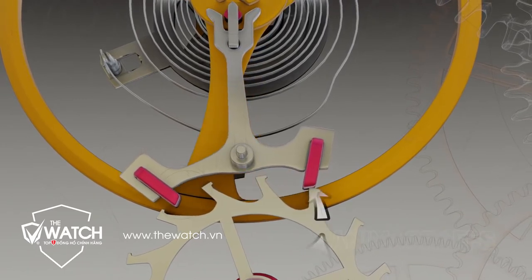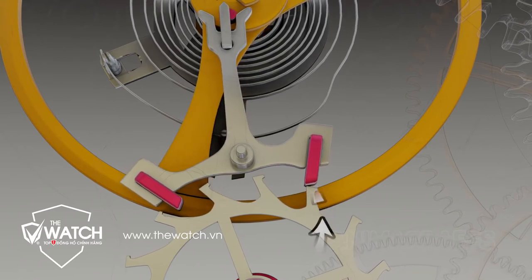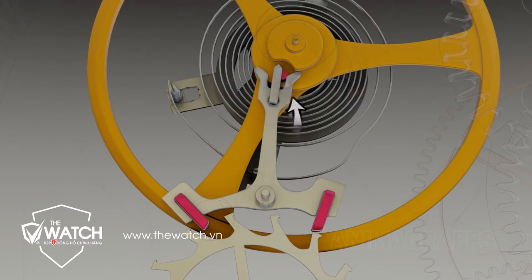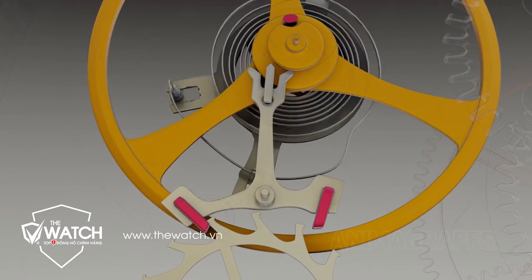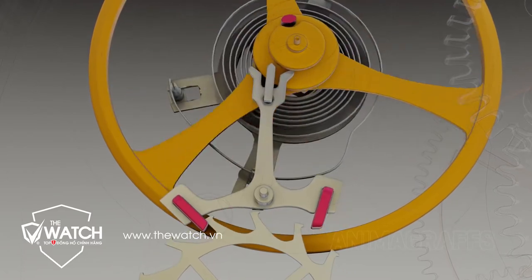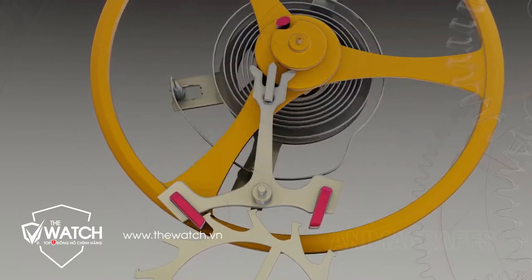Just as the pallet jewel slips free, the specially shaped escapement wheel tooth delivers a little impulse of power from the mainspring through the pallet fork, which in turn pushes the impulse pin, launching the balance wheel into another swing. And so the process repeats as long as the watch has mainspring power.